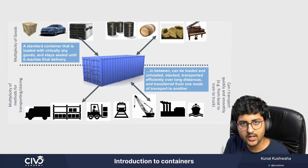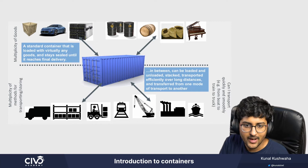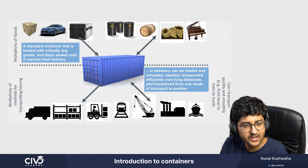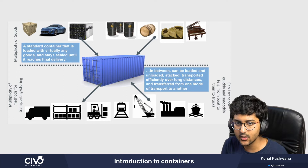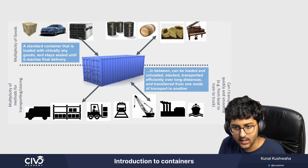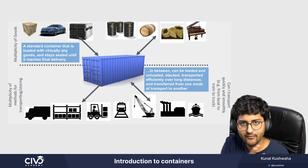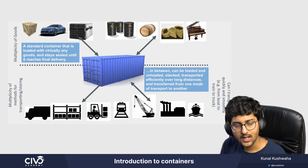The thing is that we're transporting it from one place to another. This can be looked at as an intermodal shipping container. You might have seen these containers — like the blue box — on ships. A standard container is loaded with virtually any goods and stays sealed until it reaches the final delivery. In between, it can be loaded and unloaded, stacked, and transported efficiently over long distances. You can put everything in it and that box can be transported from one place to another.